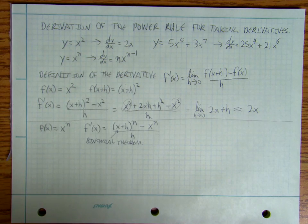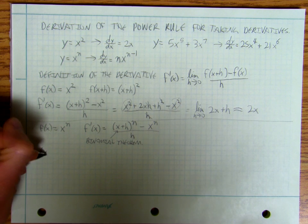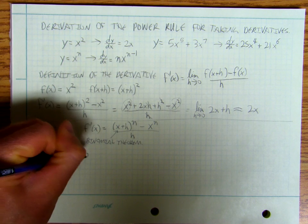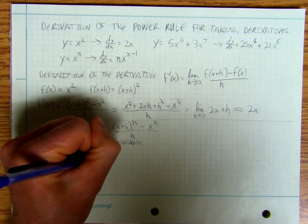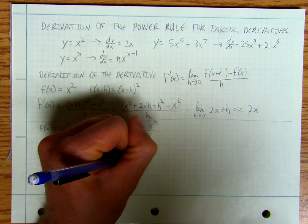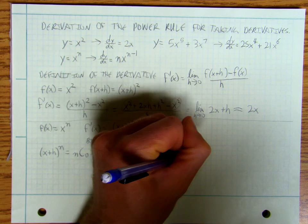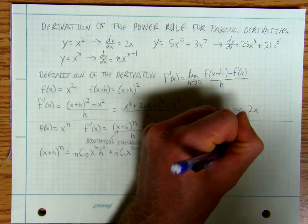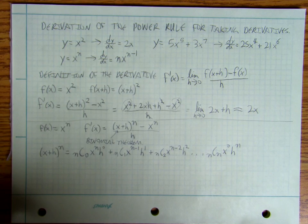You can look in your precalculus textbook about the binomial theorem, but basically what it comes down to is that x plus h to the n is going to be equal to: nC0 times x to the n times h to the 0, plus nC1 times x to the n minus 1 times h to the 1, plus nC2 times x to the n minus 2 times h squared, dot dot dot, plus nCn times x to the 0 times h to the n. So there's your binomial expansion.